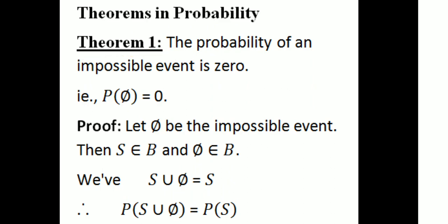First theorem, Theorem 1: The probability of an impossible event is 0. That is, P(∅) = 0. That is the proof.